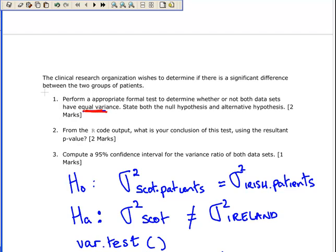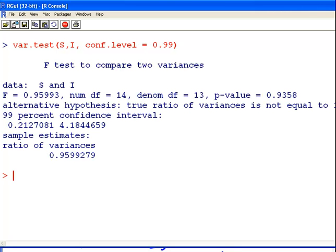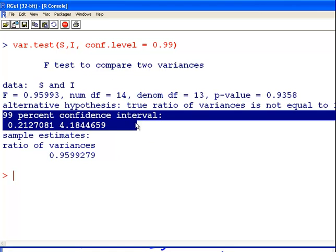Let's say, for argument's sake, I decided to do a 99% confidence interval. What do you do? You go var.test s and i conf.level equals 0.99. 99% confidence interval. There you go. It doesn't really change anything. It only changes the confidence interval here. This only has an effect on this part.